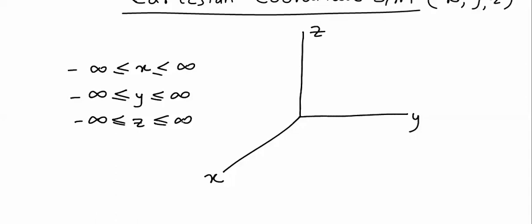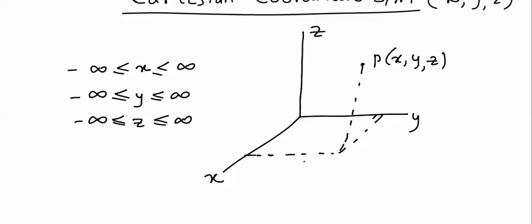X, Y, Z can vary from minus infinity to plus infinity. If I have to locate a point in space — suppose this is a point P — its coordinates will be X, Y and Z. You draw a parallel line to the Y axis and a parallel line to the X axis; they meet at a point, and then a vertical line gives the Z coordinate. In this way you obtain the point P using Cartesian coordinate systems.